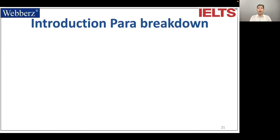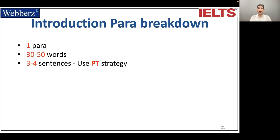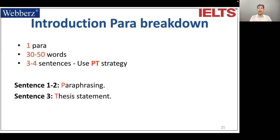Now the introduction — paragraph breakdown: one paragraph, 30 to 50 words, three to four sentences using PT technology. PT stands for paraphrasing — one to two sentences — and T stands for thesis statement, which is one sentence.